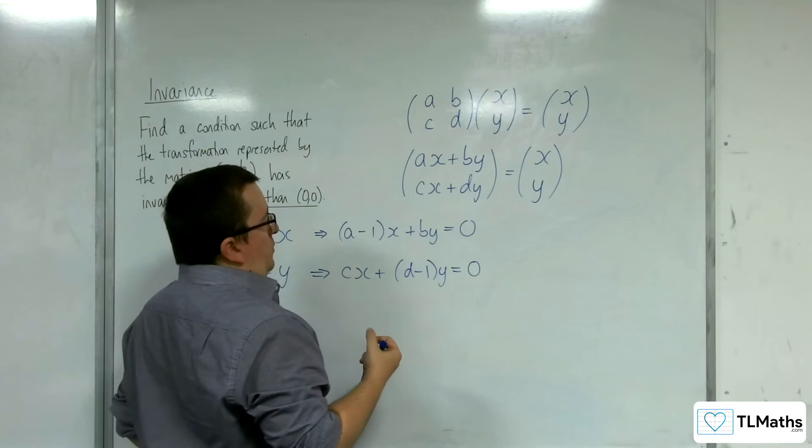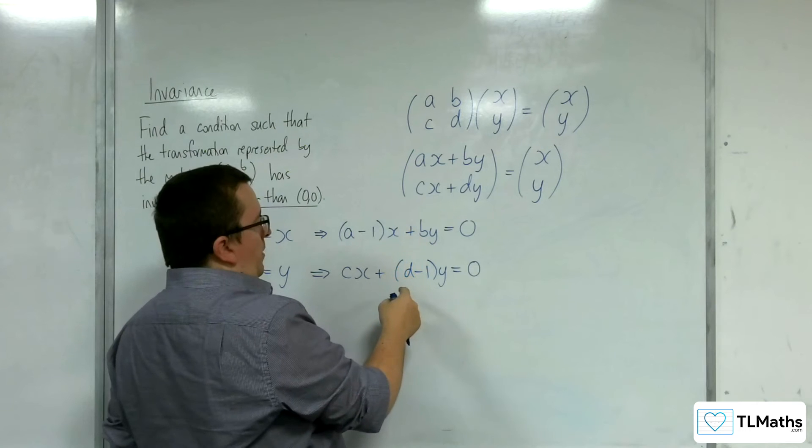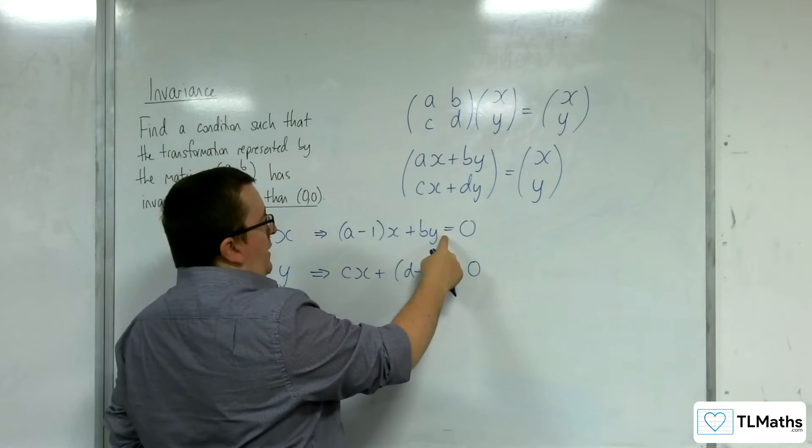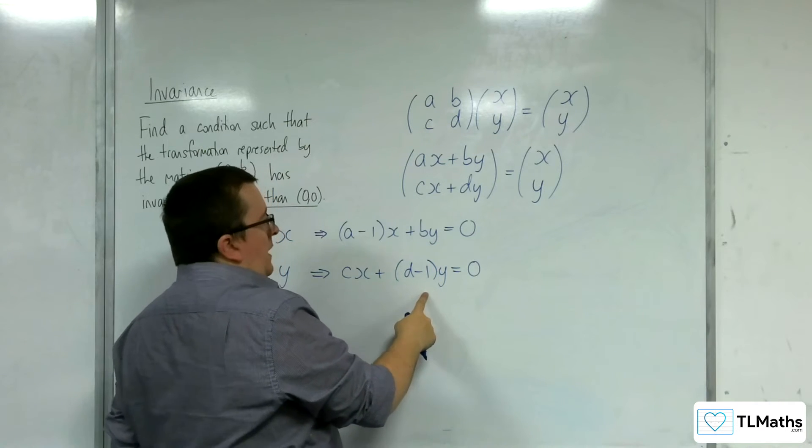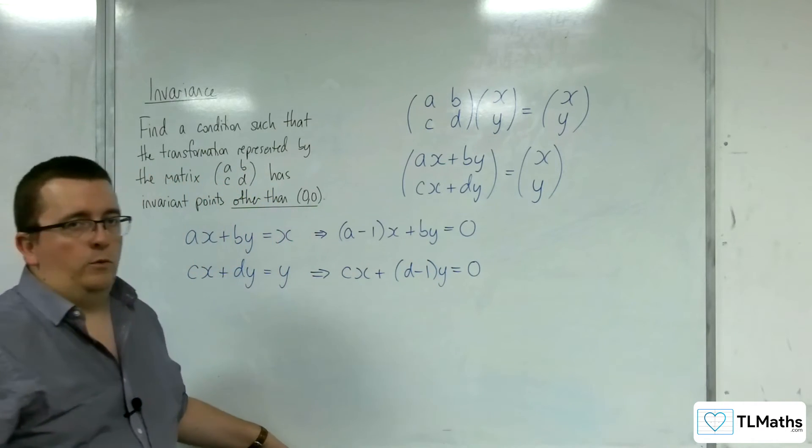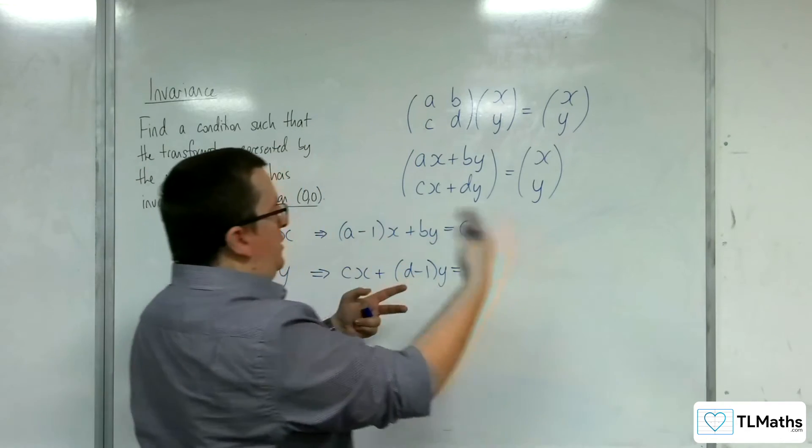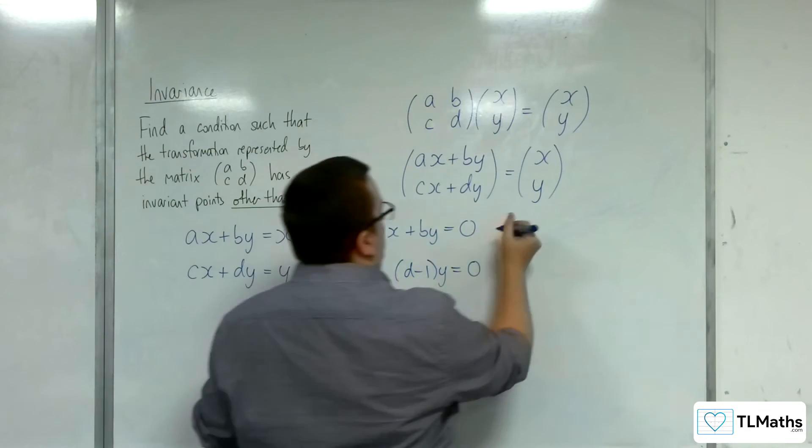What I'll do is I will multiply this equation by (d-1) and this one by b, and then I can knock out the y corners. Alternatively, I could use substitution, but I think this will probably be the easiest way.